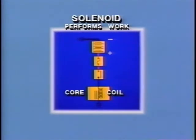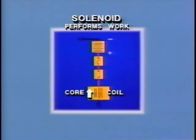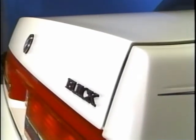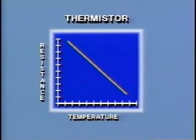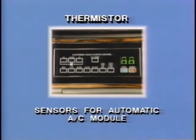A solenoid is another type of electromagnetic device. Similar to a relay, a solenoid uses electromagnetic force to overcome spring tension to perform mechanical work. As the electromagnet centers the core or plunger, work occurs. For example, the deck lid release solenoid mechanically opens the deck lid lock. A thermistor is a thermally responsive resistor whose resistance changes with changing temperature. For automotive circuits, the resistance value of a thermistor decreases as temperature increases. Because of Ohm's law, when resistance decreases, voltage drop across the thermistor will also decrease. For example, thermistors are connected as sensor feeds to the automatic air conditioning system control module. The module uses the increase or decrease in the voltage signal to control system output.